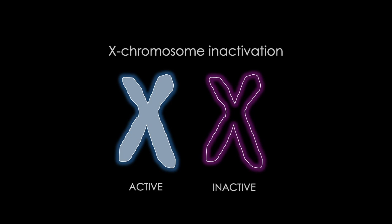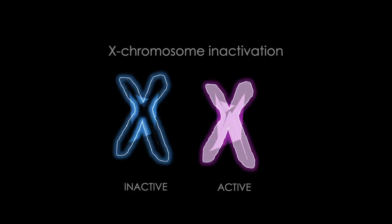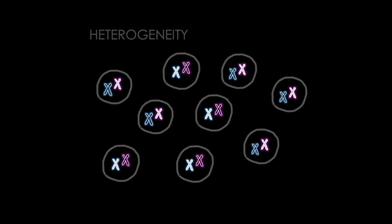The silenced chromosome can either be the maternally inherited chromosome or the paternally inherited chromosome. This selection is typically random across different cells, which means there is heterogeneity across the organism, or often called mosaicism.